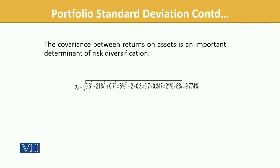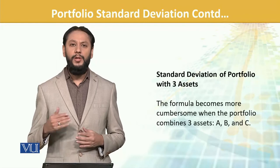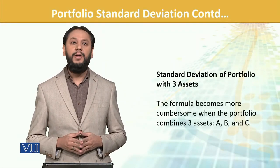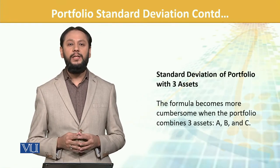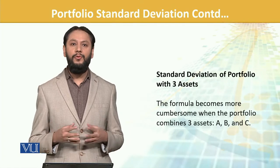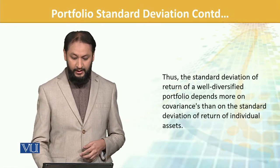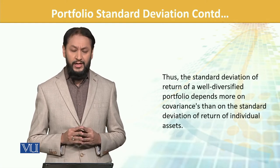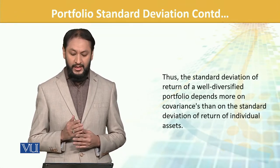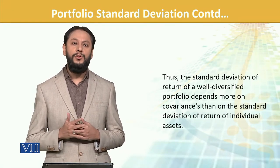So 9.774% is the standard deviation of the portfolio. The calculation is cumbersome manually, but because we have computers and systems it is done automatically — it is not a difficult task to calculate for more than two assets either. Importantly, the standard deviation of a well-diversified portfolio depends more on covariance than on the standard deviations of the individual assets — covariance and correlation play the dominant role.